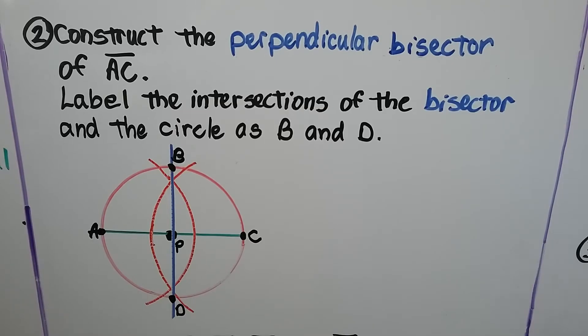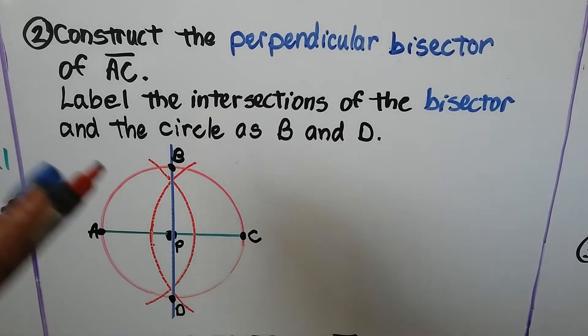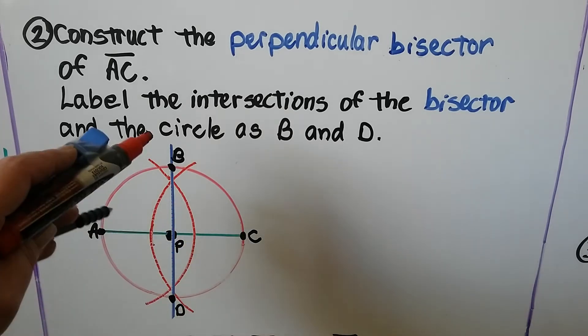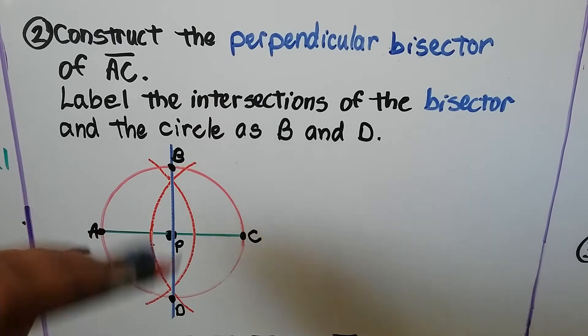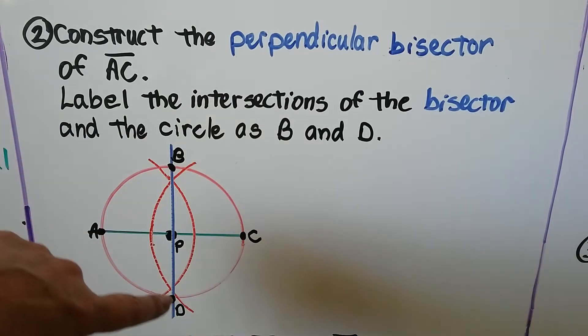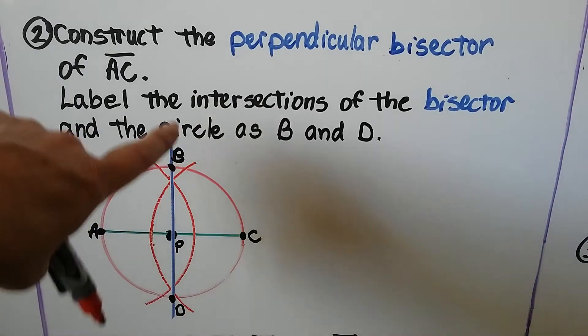Then we construct the perpendicular bisector of segment AC. If you don't remember, we set our compass a little farther past P, put the point on A and make an arc. Keep the same setting, put our point on C and make an arc. Where these two arcs intersect, we draw a line through it. That's our perpendicular bisector.